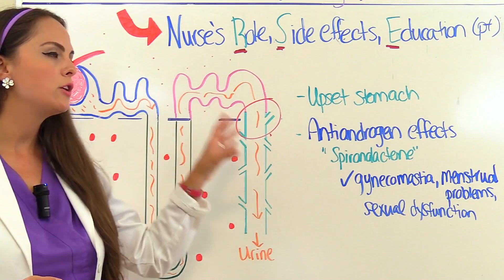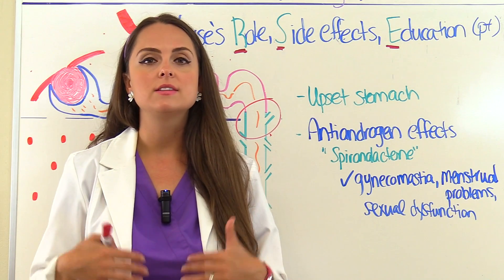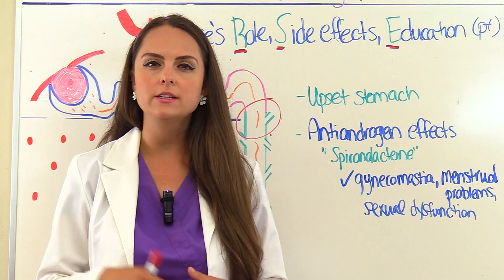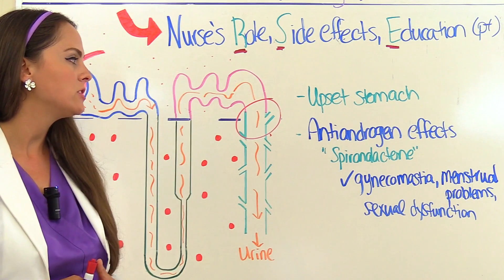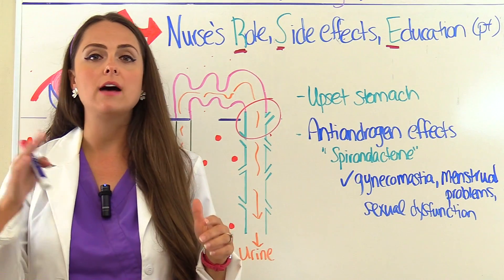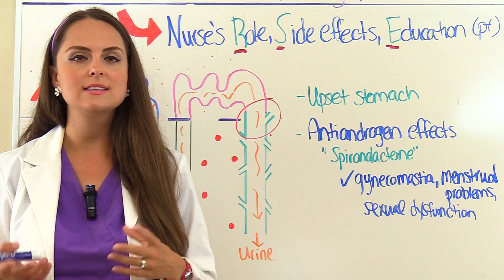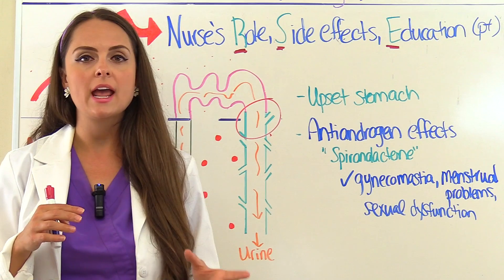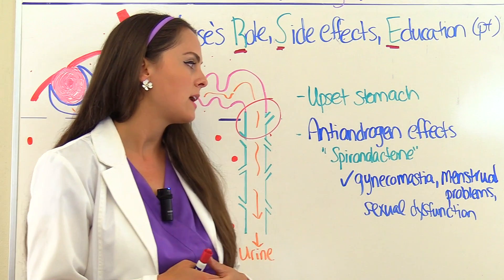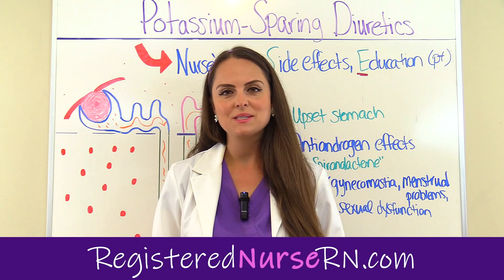Some miscellaneous side effects to remember: some of these medications can upset the stomach, so patients may want to take this medication with food or right after a meal to help decrease those symptoms. These medications can also produce an anti-androgen effect — mainly the aldosterone antagonists, specifically spironolactone — because this medication affects androgen and progesterone receptors. Some patients may experience gynecomastia, menstrual problems, and sexual dysfunction. That wraps up this review of potassium sparing diuretics.